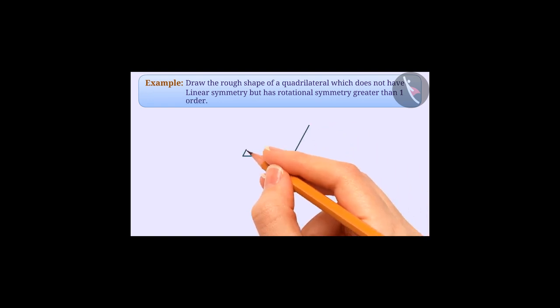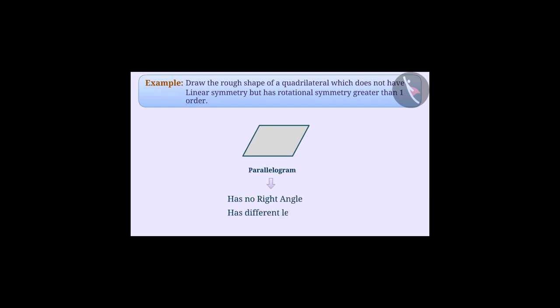Next example: draw the rough shape of a quadrilateral which does not have linear symmetry but has rotational symmetry greater than one order. A parallelogram that has no right angle and has different lengths of adjacent sides is an answer to this question. Can you tell me why?